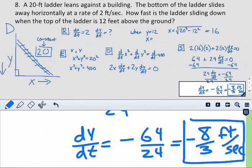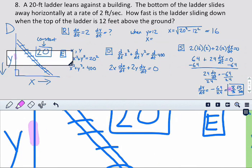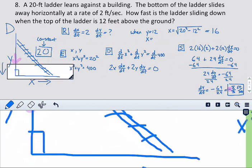Now, very important that you realize that we should have gotten a negative answer here. And the reason it's negative is that this height is actually decreasing. So always check to make sure that the rate that you get in the end makes sense for the situation here. So again, the rate of Y is negative 8 thirds feet per second because it's going down as X slides away.